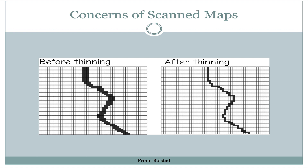There are concerns that are specific to maps that have been scanned in, for example, by a large format scanner. Let's suppose, for example, a black and white map was scanned in where black lines were drawn on a white background. In the end, what we would see is that each of the pixels was either assigned to a black color or to a white color.